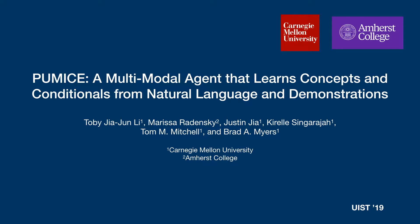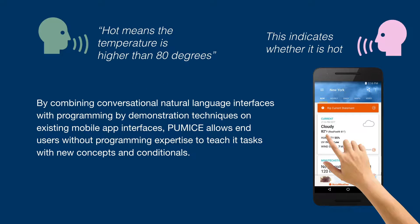In this video, we present PUMIS, a new multi-mobile domain independent end-user programmable intelligent agent. By combining conversational natural language interfaces with programming by demonstration techniques on existing mobile app interfaces, PUMIS allows end-users without programming expertise to teach the agent tasks with new concepts and conditionals.